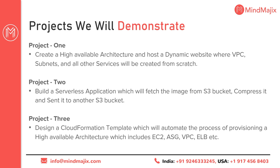Project Three: automation using CloudFormation. Whatever infrastructure we created manually in Project One, we will recreate using a CloudFormation template — Infrastructure as Code. You don't need to know coding; we'll cover it in the course. When you run the template, the whole infrastructure — including EC2 (Elastic Compute Cloud), auto-scaling groups, VPC, and Elastic Load Balancer — will be created automatically.